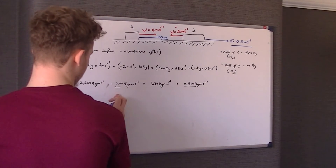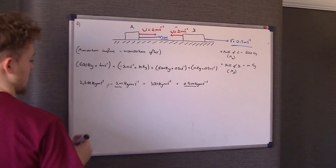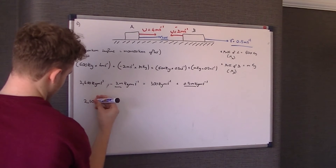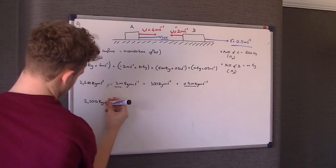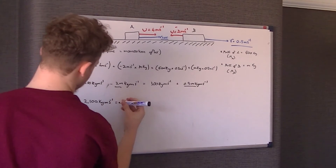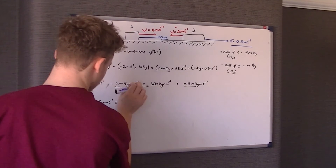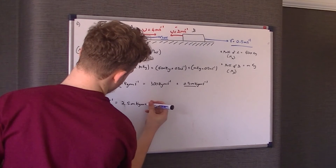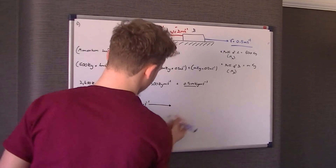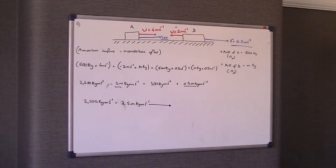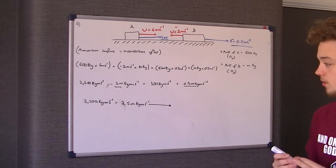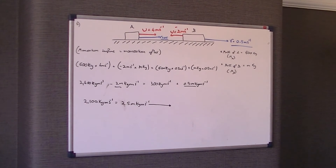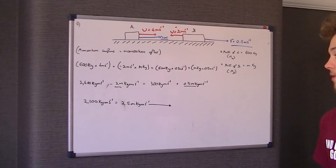Now it's just a case of rearranging. The first thing you would do is subtract 300 kilogram metres per second from each side, so that gets you 2,100 kilogram metres per second. Then we add 2M kilogram metres per second to both sides, which gives us 2.5M kilogram metres per second. Therefore we divide both sides by 2.5, and that would cancel down to give us a value for M.